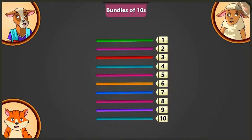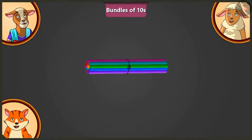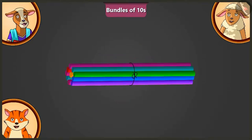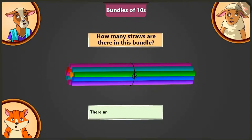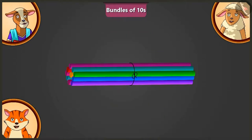Now these ten counted straws are tied together with a rubber band, making one bundle of ten. Billy confirms there are ten straws in this bundle. Billy is then asked to make a second bundle of ten straws in the same way.